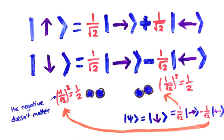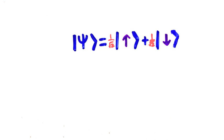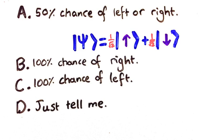But now, here's the really tricky question. What if I had a particle that was in a superposition of half up plus half down? If I measured its left or rightness, what would happen? Think about it, and then click one of these options.